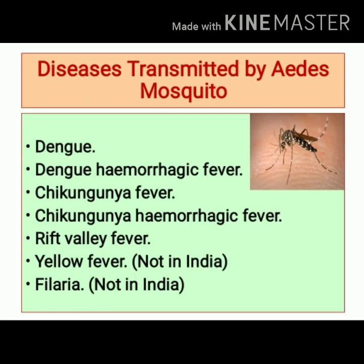The Aedes Mosquito is involved in transmission of dengue, dengue hemorrhagic fever, chikungunya fever, chikungunya hemorrhagic fever, rift valley fever, yellow fever, and filaria. However, in India, Aedes is not involved in the transmission of yellow fever and filariasis.